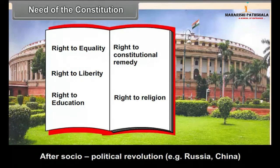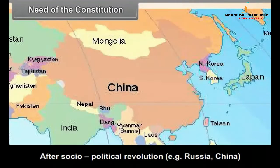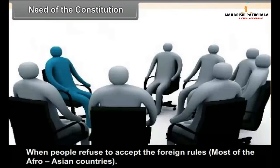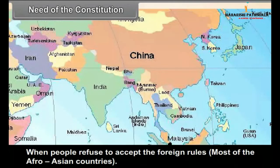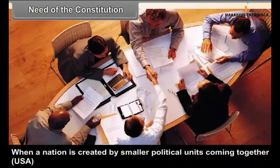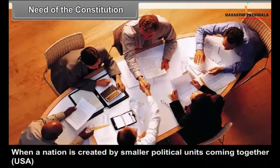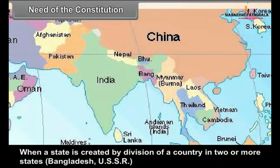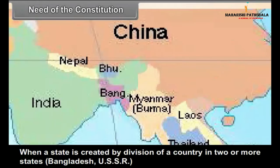In which situations does the need for a constitution arise? After a socio-political revolution — for example, Russia and China. When people refuse to accept foreign rule — that is, most of the Afro-Asian countries. When a nation is created by smaller political units coming together — for example, the USA. When a state is created by the division of a country into two or more states — for example, Bangladesh and the USSR.